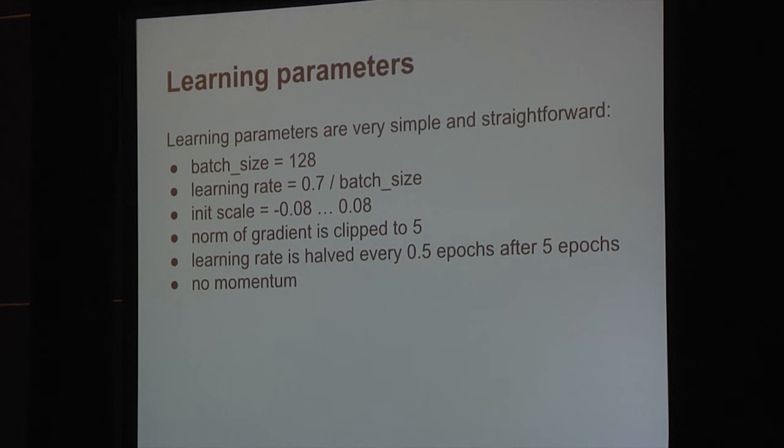One really important point is that this model wants to work. It's no longer the case that neural network training and tuning is black magic. The amount of tuning that was required for this model was small, and all of it is described in this one slide. The batch size is 128. The learning rate is 0.7 divided by batch size. The initial scale is uniform between minus 0.08 and plus 0.08, and we control the norm of the gradient so that it's no greater than five. Finally, we halve the learning rate every half epoch after five epochs. That's all it takes to get this thing to work. There are only four things you need to know in order to tune your neural network in 90% of the cases. We didn't even use momentum.